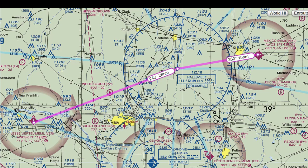Then on the from leg of the VOR, we will fly from Hallsville to the Jesse Vertel Memorial Airport — and I hope I pronounced the name right — on the 243 degree radial.